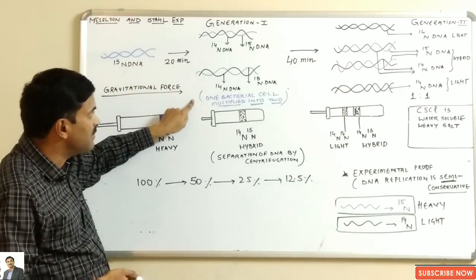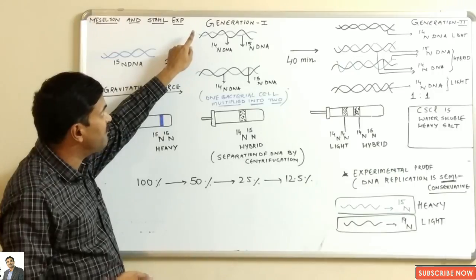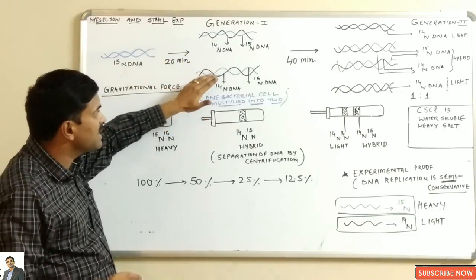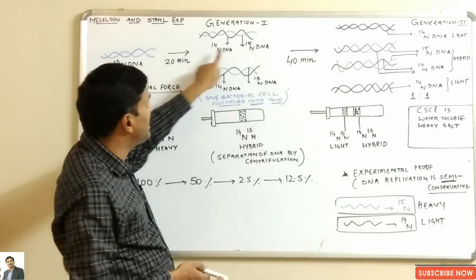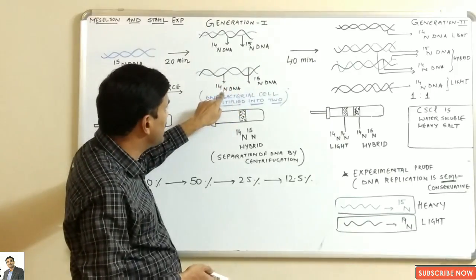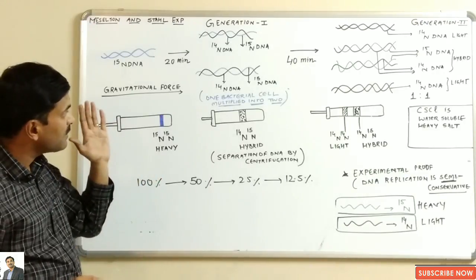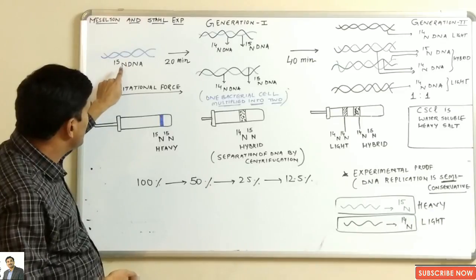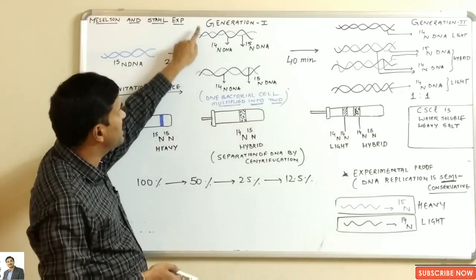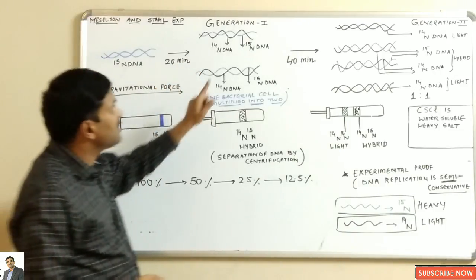After 20 minutes, when the E. coli has divided once (generation 1), the DNA isolated showed hybrid densities. One strand contained N15 DNA and the other strand contained N14 DNA. Such DNA is called hybrid density DNA. So in generation 1, all DNA had hybrid density.